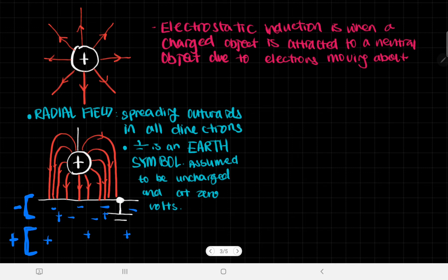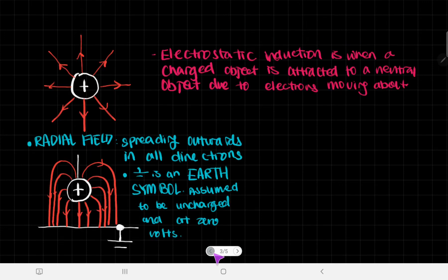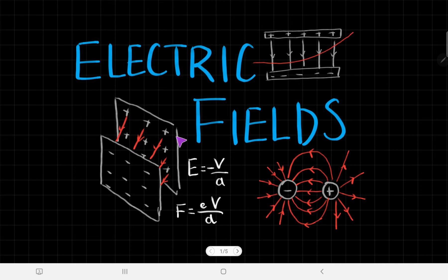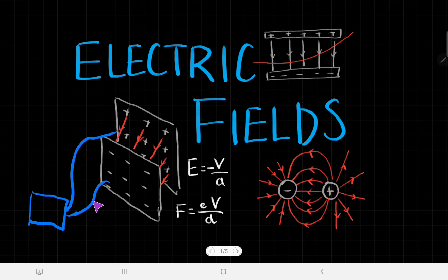We can also talk about the uniform field. To create one, you use a pair of charged parallel plates. They are parallel to each other and connected to something that generates electricity, which charges one plate negative and the other plate positive. The key takeaway is that the plates are flat and parallel so there is equal distance between them at all points — without this, the field lines won't be uniformly spaced and it won't be a uniform field.